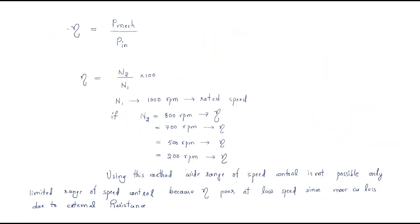Now if we want to find the efficiency and how it varies, we should look at this. We are discussing about the motor — the motor will take the input of electrical power and give the output of mechanical power. The efficiency equals output divided by input, where output is mechanical power and input is electrical input.